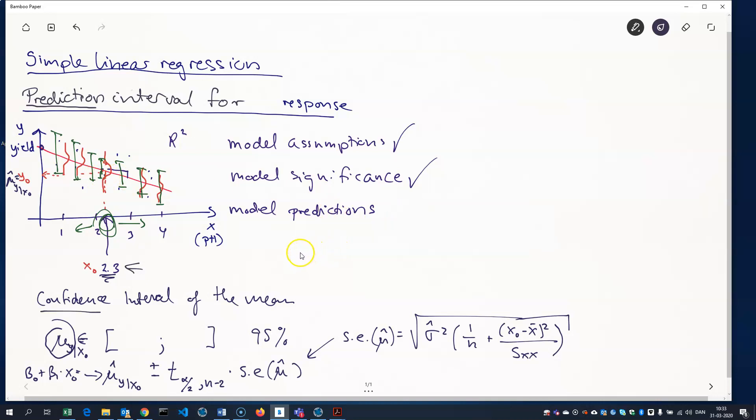And the method is very much the same. We have a little bit of different notation. So the prediction interval, let's just make it a 95% prediction interval for the response. So we'll call that Y0. So now we're predicting this thing here instead of that thing, the mean.